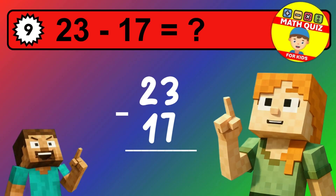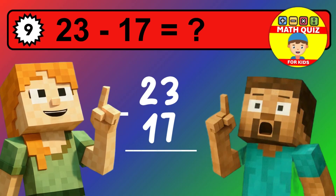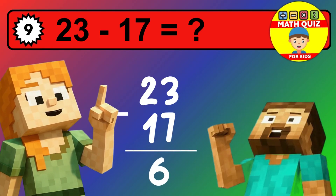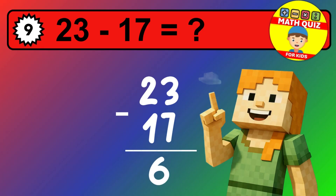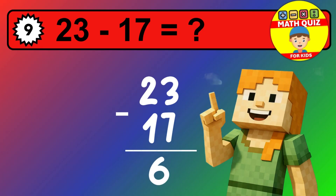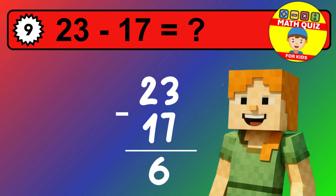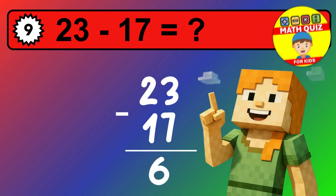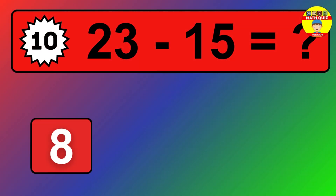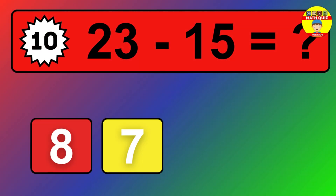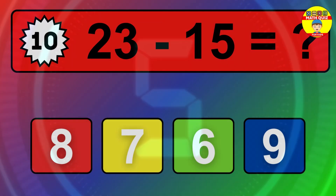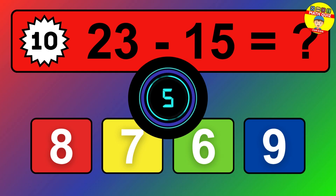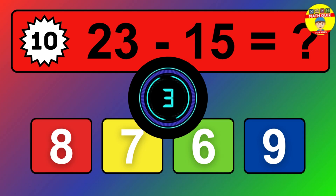We start with the units. 2 minus 3 is not possible, so we need to regroup. We take one 10 from the tens column. Now we have two tens, and the units become 12. Now we subtract. 12 minus 3 is 9. Then we go to the tens. 2 minus 2 is 0. The final answer is 9.